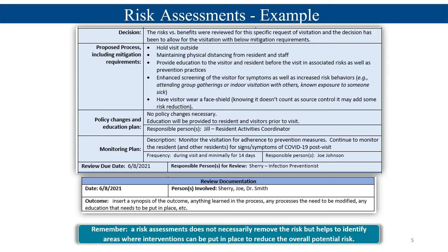Then it moves to a section where you look at your decision-making process. As you'll notice with the risk assessment, it's not always black and white — it takes critical thinking and review of all the points. In this instance, the decision was that the risk versus benefits were reviewed for the specific event of this visitation and it was decided to be allowed with the following mitigation requirements. The next section, 'proposed process including mitigation requirements,' lists the bullet points of risk mitigations and precautions to be put in place for the visitation to occur.